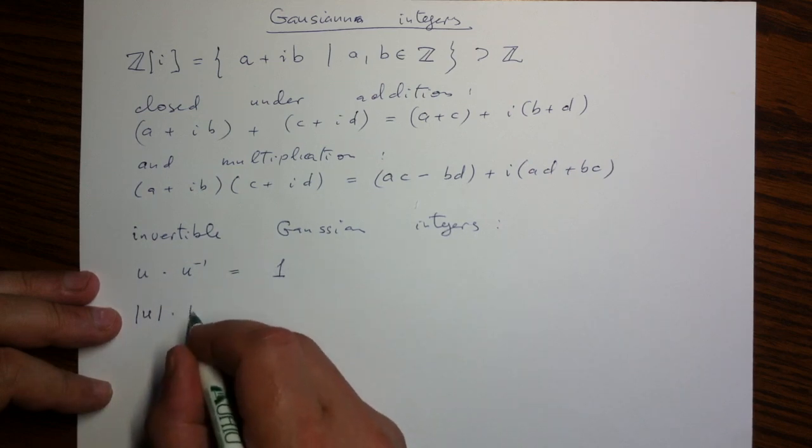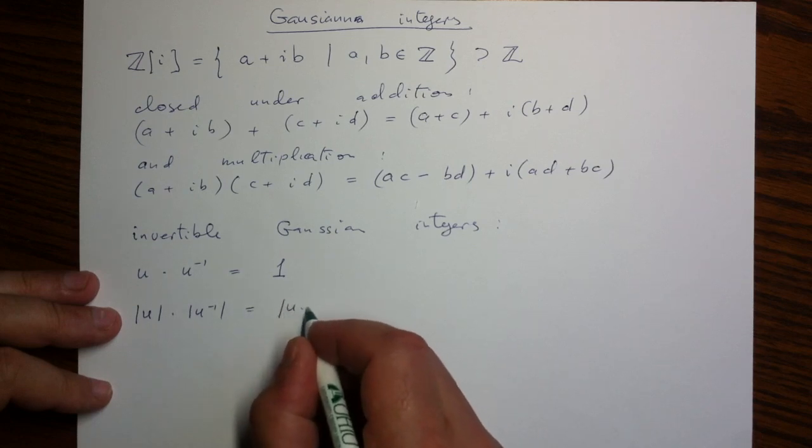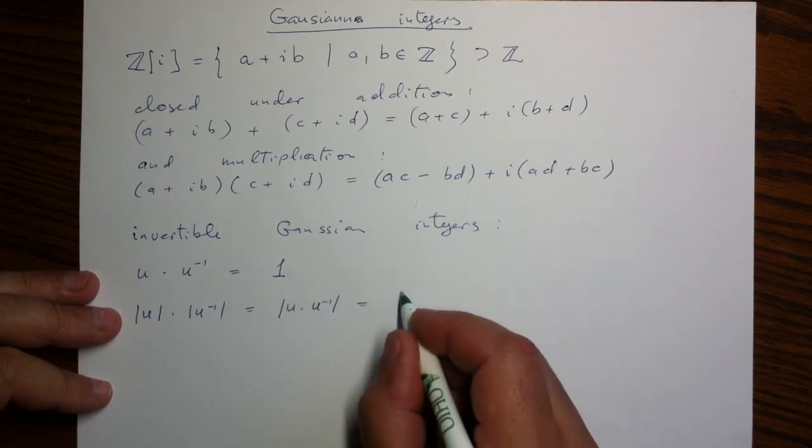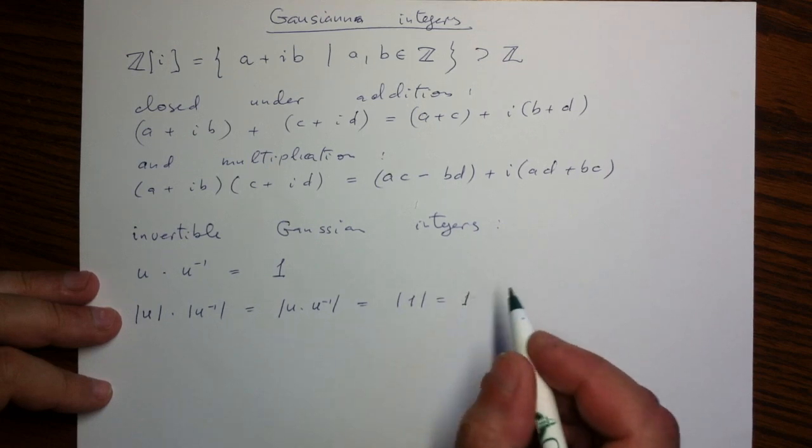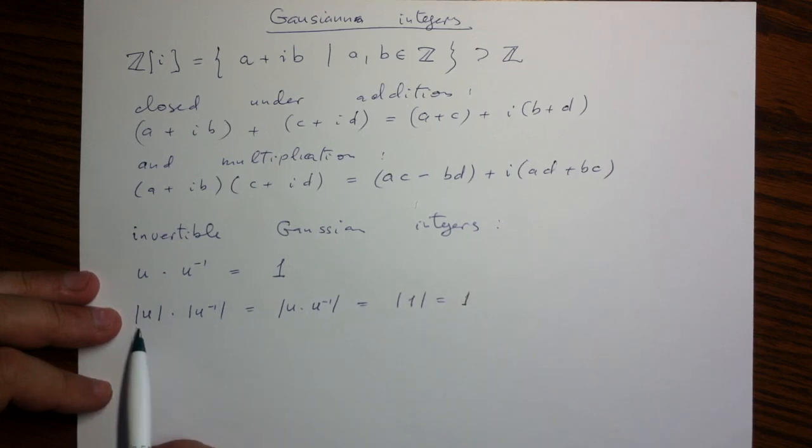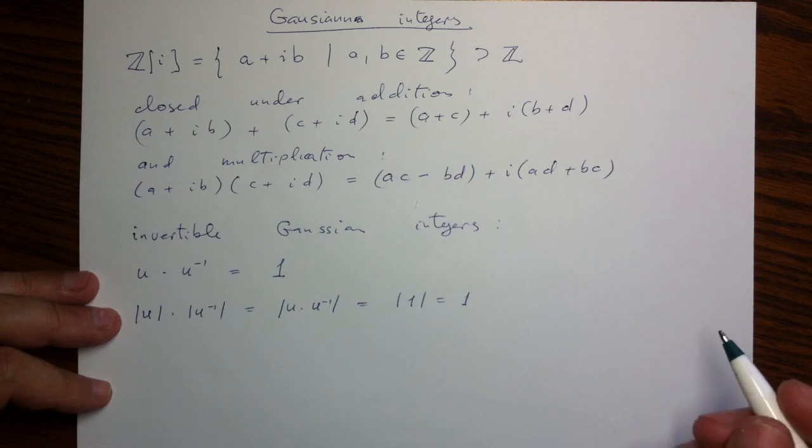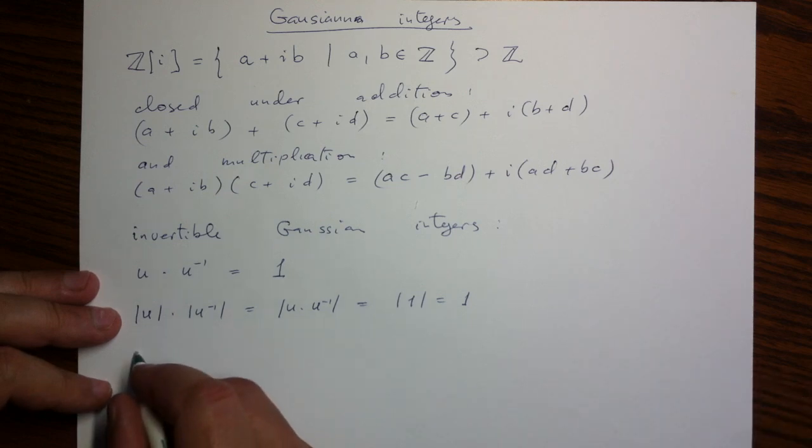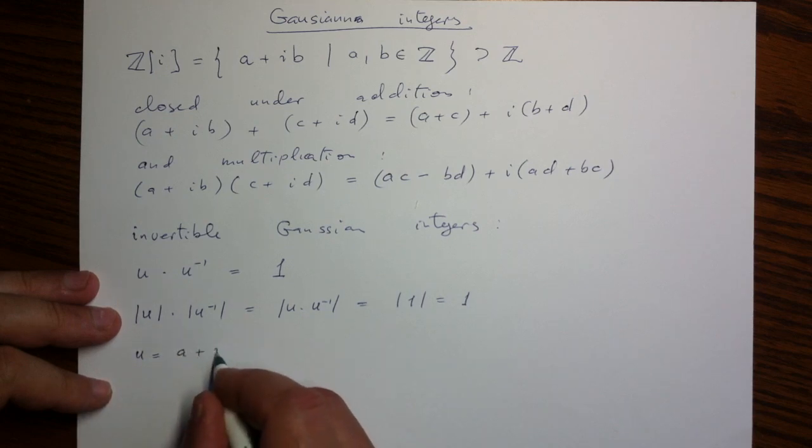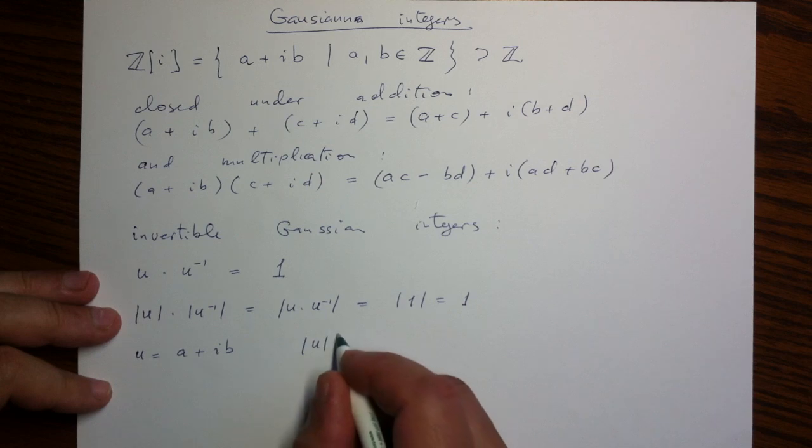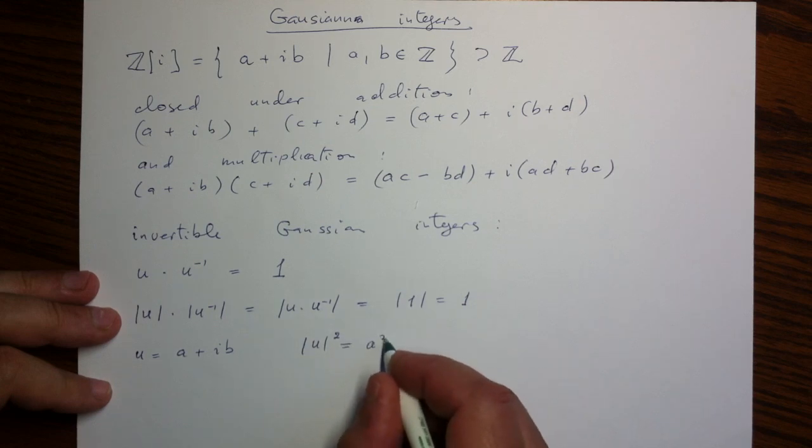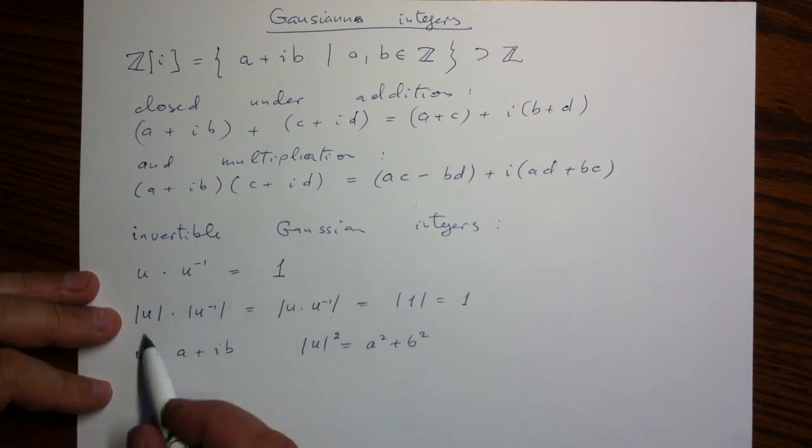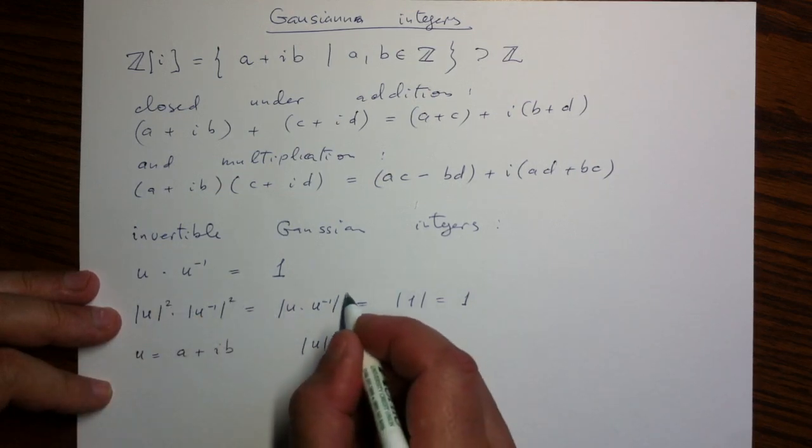Let's apply squared absolute value, squared modulus, to the sides of this equation. So, on one side, we will have the modulus. Well, let's just start with the modulus first, and we can rewrite it quickly as a product because the absolute value is multiplicative. And then, on the other side, we have the modulus of one, which is just one. So, we can see that the modulus of u and the modulus of u inverse will have to multiply to one. Well, the modulus, by definition, is the square root of the sum of squares.